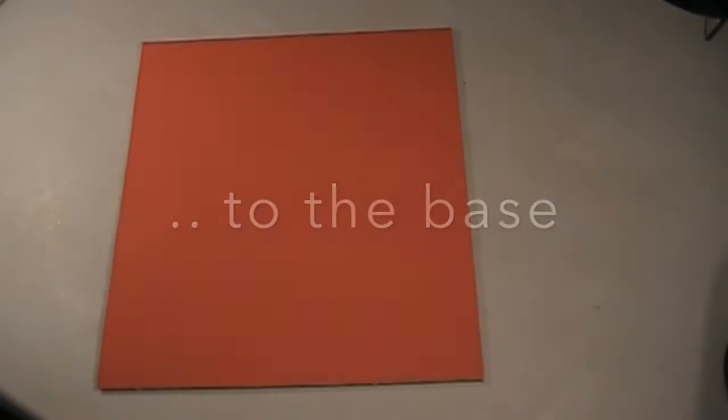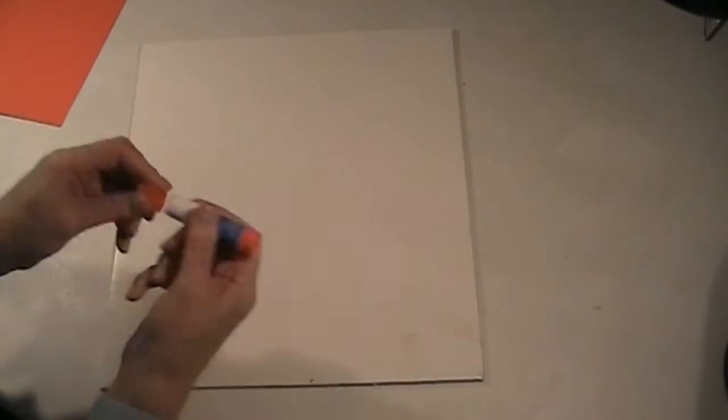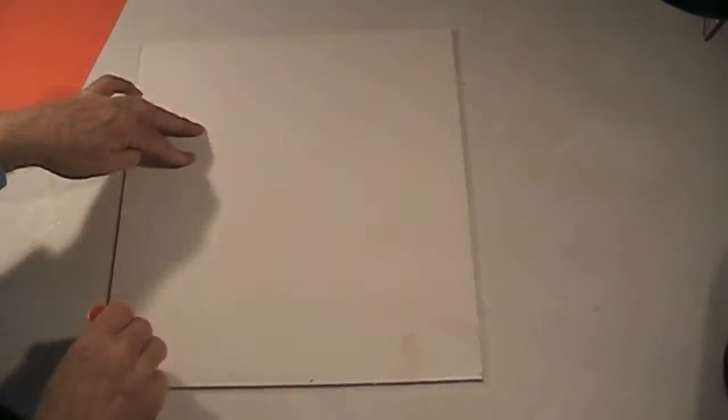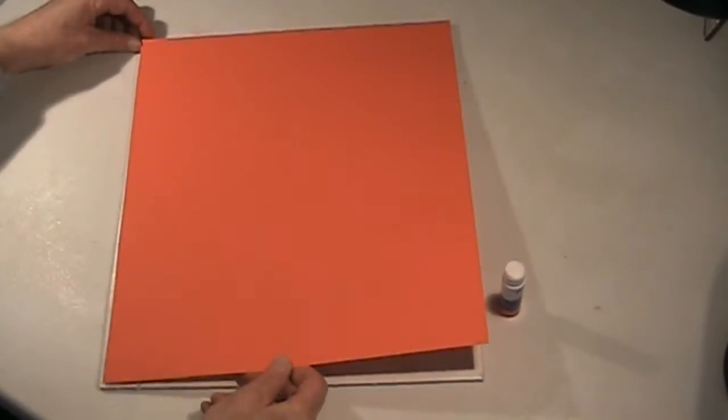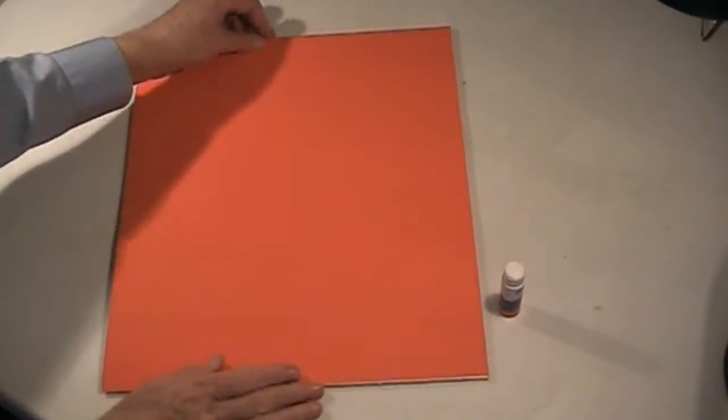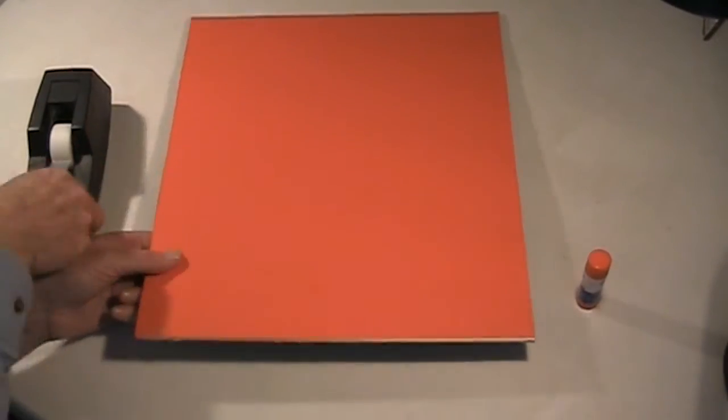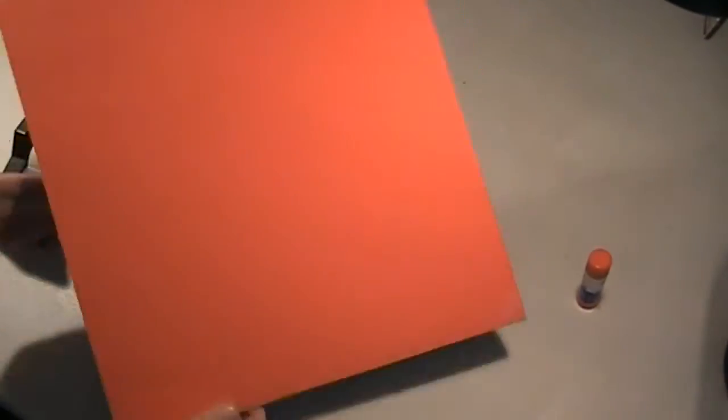So, now we're going to attach the construction paper to the foam board you have, or cardboard. What you do is use your glue stick, and just glide it around, and make sure there's plenty of glue on there so you can stick the orange construction paper on top, and it'll stay. Now, to help it stay, you might want to use a little bit of tape. Just tape each corner down to make sure it doesn't come off when you don't want it to.